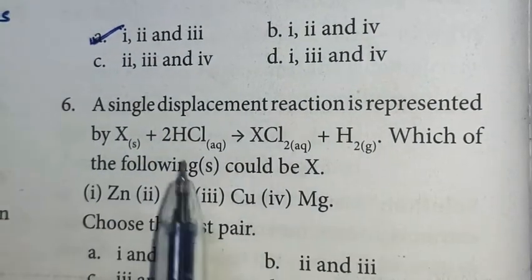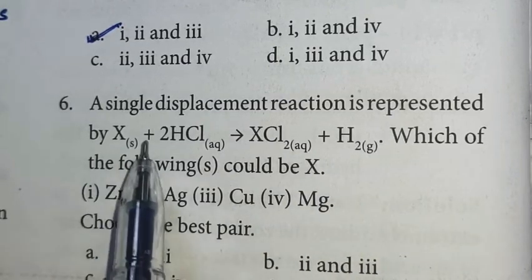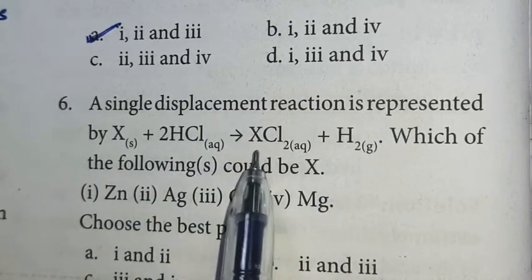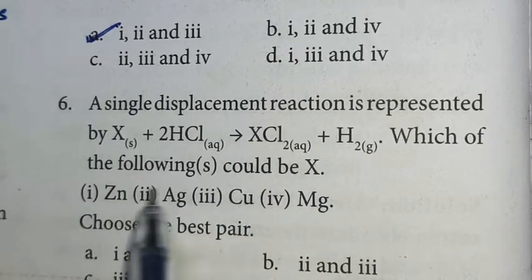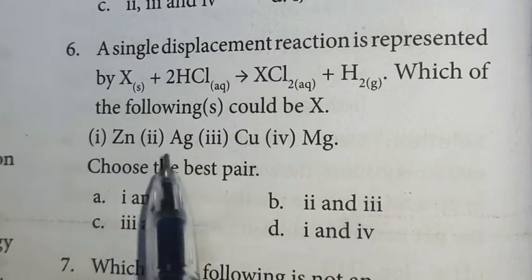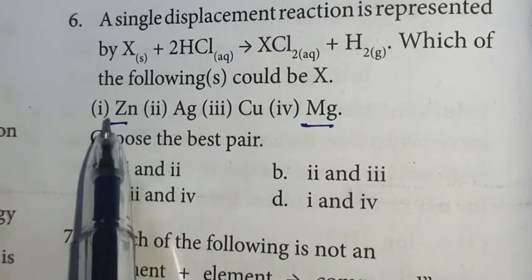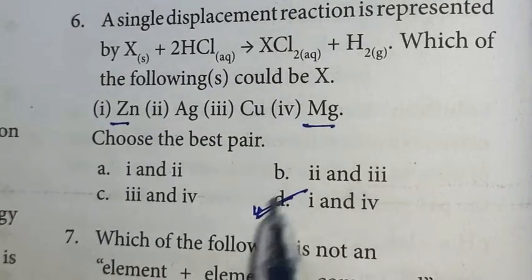Sixth question: A single displacement reaction is represented by X plus 2HCl gives XCl2 plus H2. Which could be X? This X could be zinc or magnesium, so option D is the right answer.